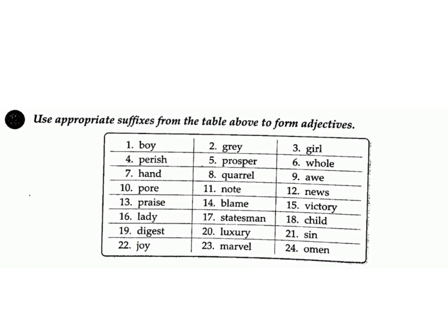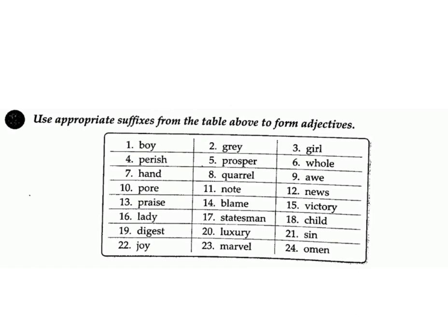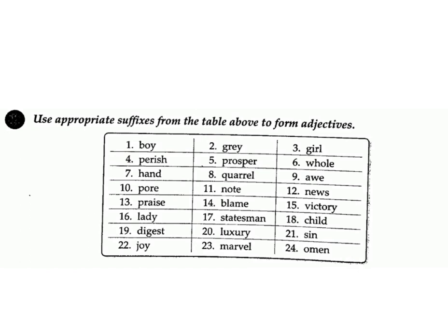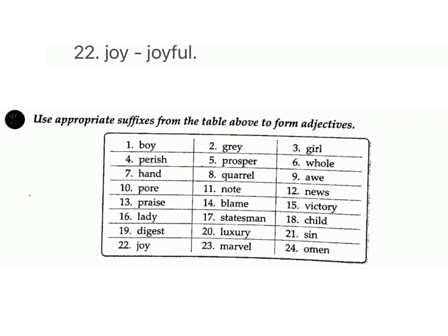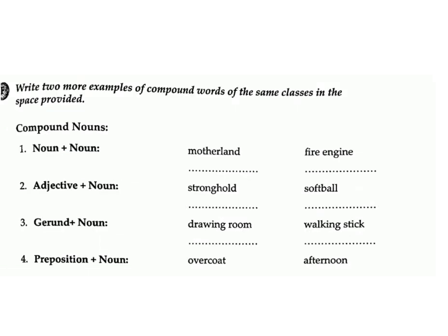18. child – childish; 19. digest – digestible; 20. luxury – luxurious; 21. sin – sinful; 22. joy – joyful; 23. marvel – marvelous; 24. omen – ominous.